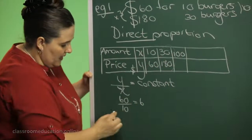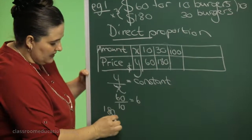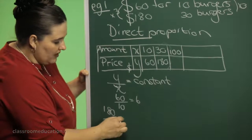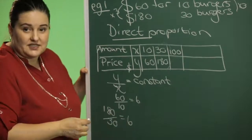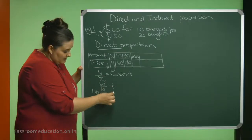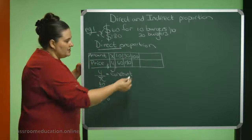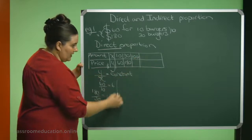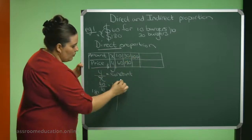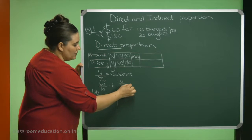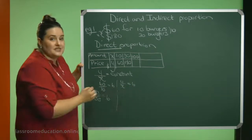Let's do it here. 180 divided by 30 will give me a value of 6. So because this is the same value, we are working with direct proportion. So what do I need to do here? I need to say my Y divided by X should give me a value of 6.